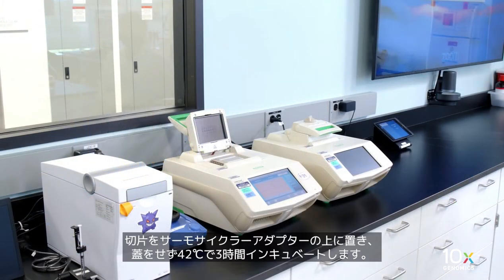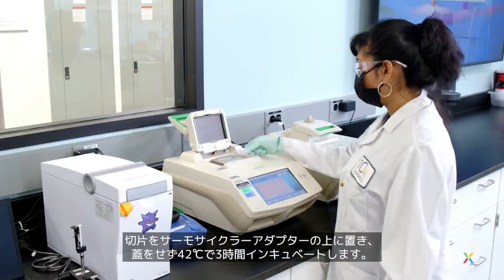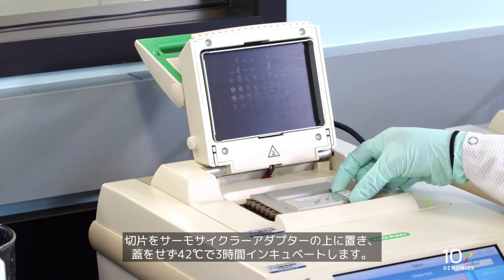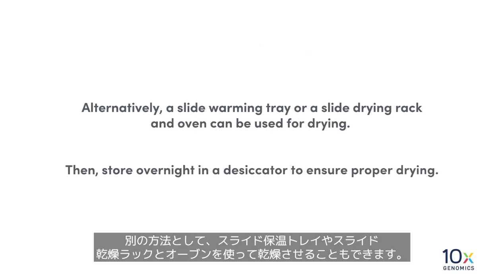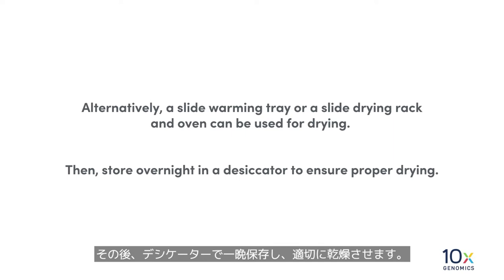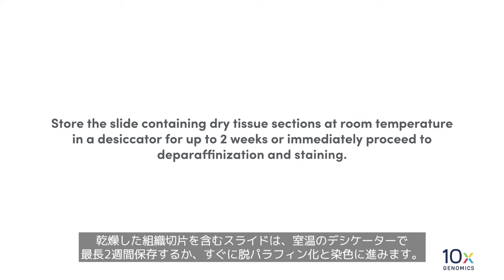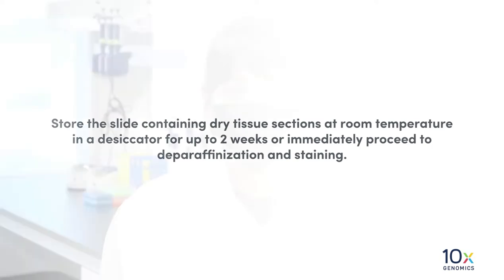Now we will dry the sections. Place the slides on a thermocycler adapter and incubate for three hours at 42 degrees Celsius with the lid up. Alternatively, a slide warming tray or a slide drying rack and oven can be used for drying. Then store overnight in a desiccator to ensure proper drying. Store the slide containing dry tissue sections at room temperature in a desiccator for up to two weeks, or immediately proceed to deparaffinization and staining.